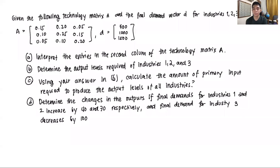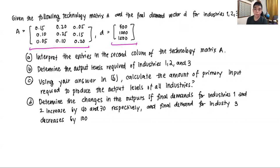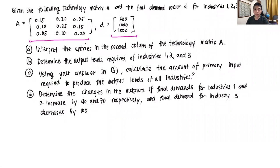Hi everyone, and welcome to this video on an actual example of the Leontief input-output model, which we're discussing here at Mathematical Economics in our module on the economic applications of matrix algebra. We have here a technology matrix A and a final demand vector D. We're asked a sequence of questions and we'll answer each one. By the end of this, together with the previous lecture linked at the end, you'll have a much better understanding through this actual mathematical example.